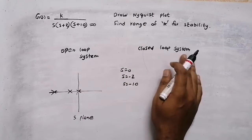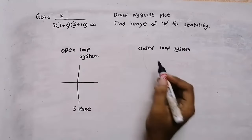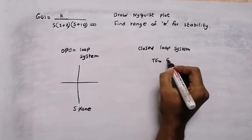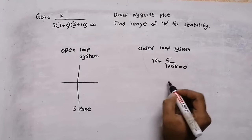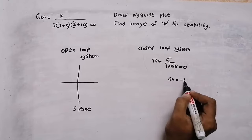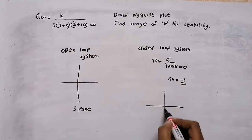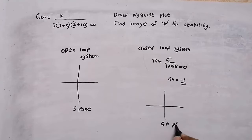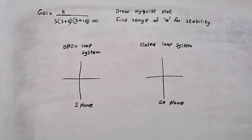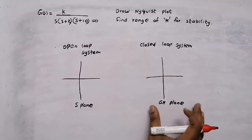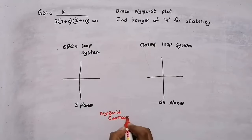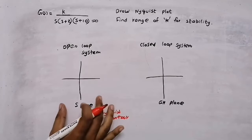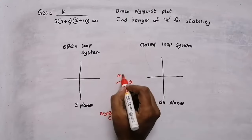We need to find the stability of the closed loop system, so we need to draw the Nyquist plot. The closed loop transfer function is G divided by 1 plus GH. For getting poles, we equate the denominator equal to 0, that means 1 plus GH = 0, giving GH = -1. So we need to draw the plot in the GH plane. We need to convert the s-plane into the GH plane using the Nyquist contour — this process is called mapping.